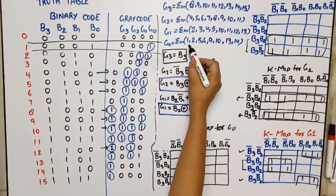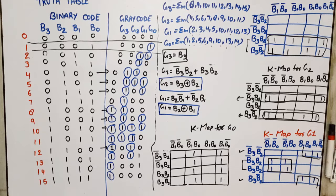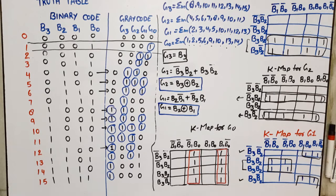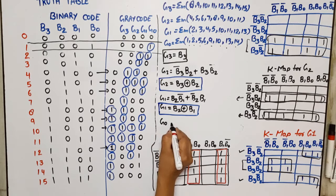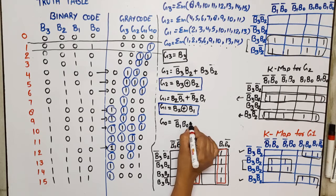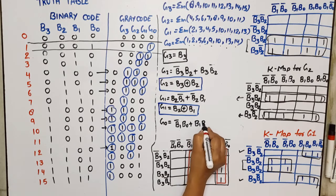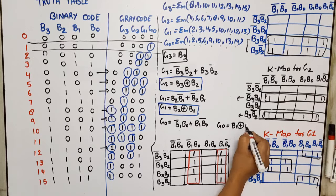For the last K-map, G0 has minterms 1, 2, 5, 6, 9, 10, 13, 14. Two quads are possible. The expression derived is: G0 = B1-bar·B0 + B1·B0-bar, which simplifies to G0 = B1 XOR B0.